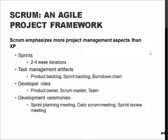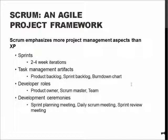We also talk about task management artifacts, which are the product backlog, sprint backlog, and burndown chart. These are basically lists of objectives, use cases, features, or things which we need to do or create for the software. The product backlog includes all the different things we need to do for the product, while the sprint backlog includes all the items we need to do within the current sprint.